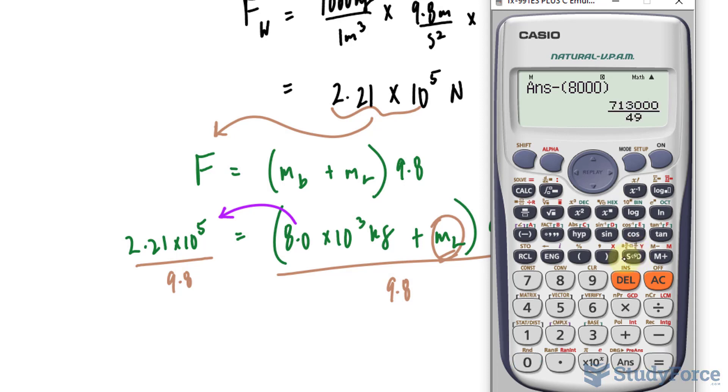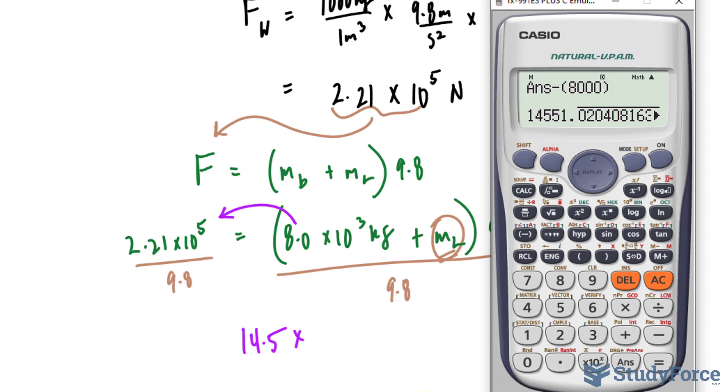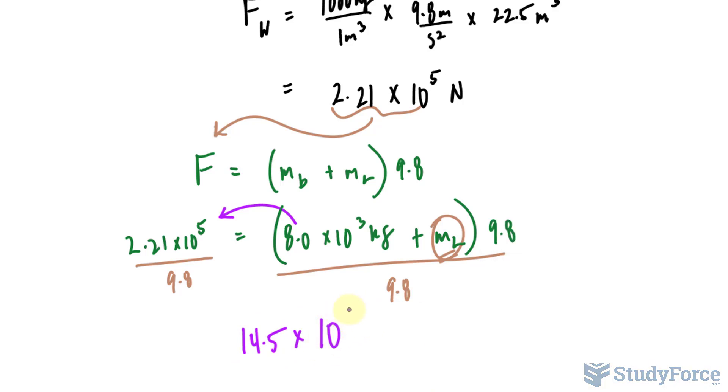And we get the mass, or the load mass being, and rounding this to three digits, we have 14.5 × 10³.